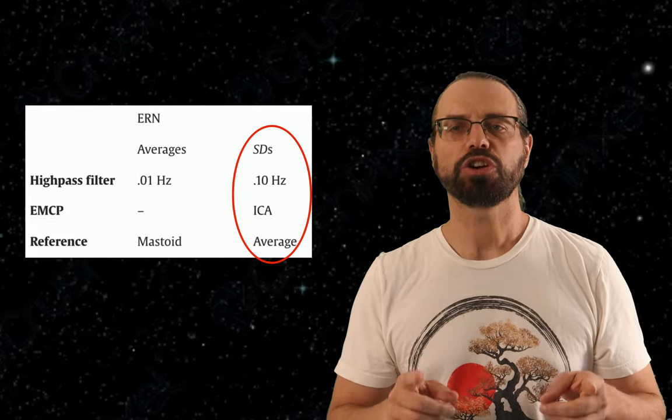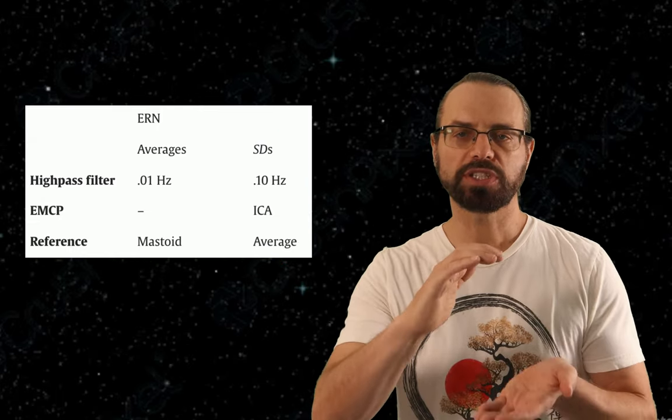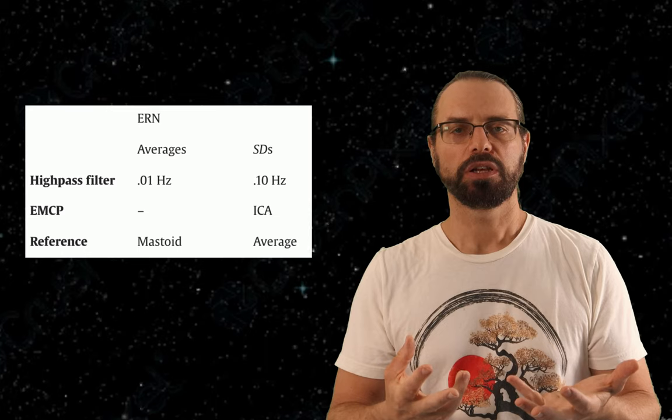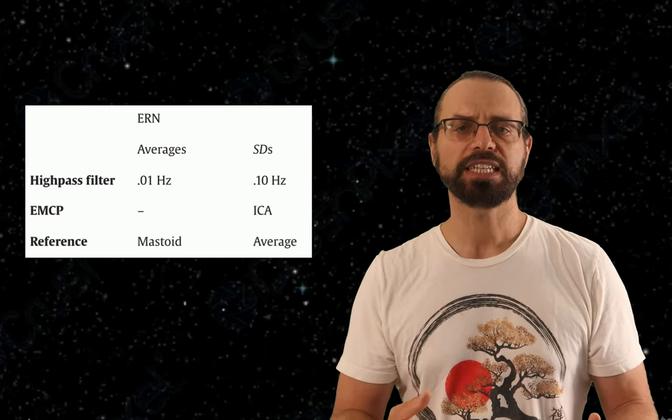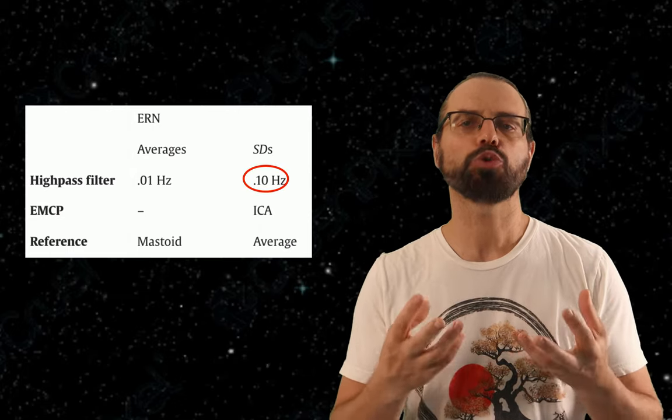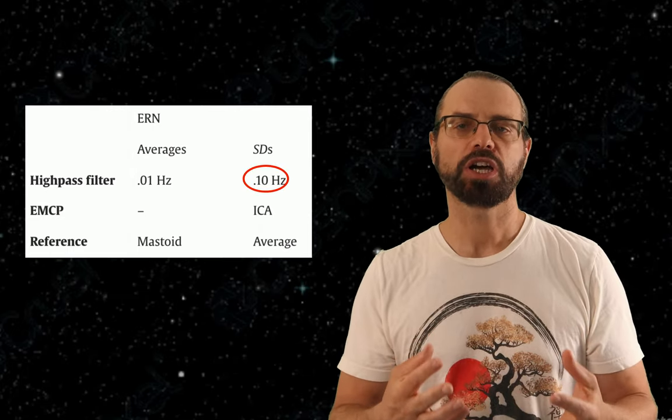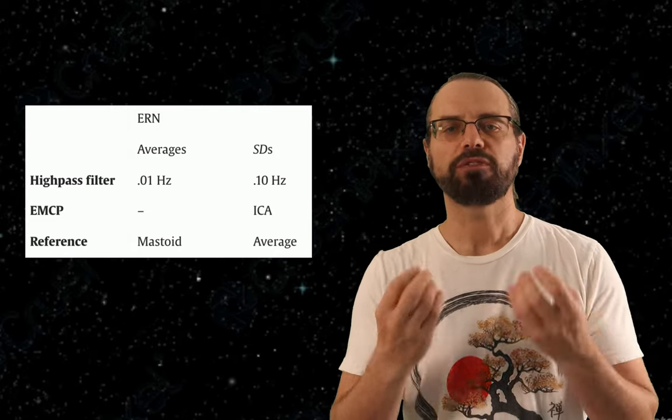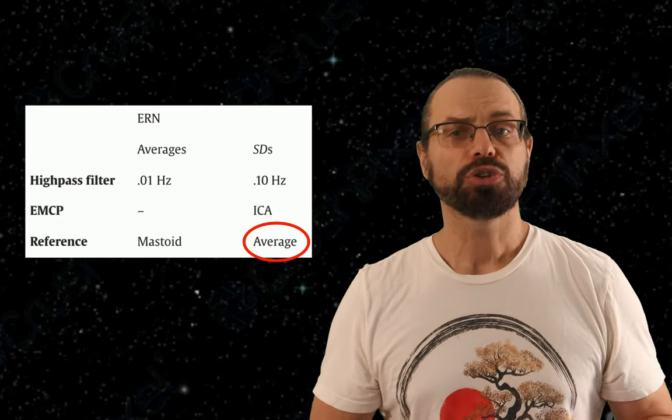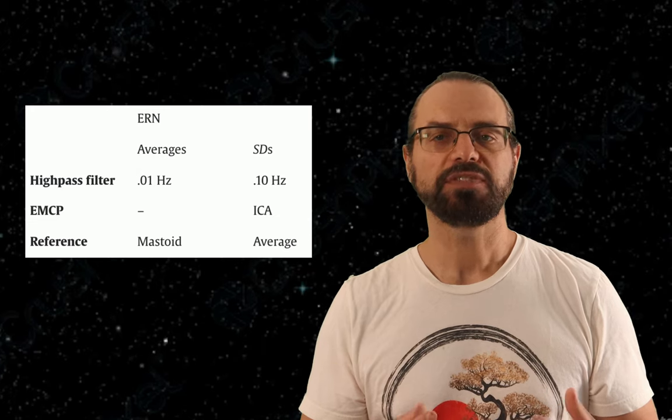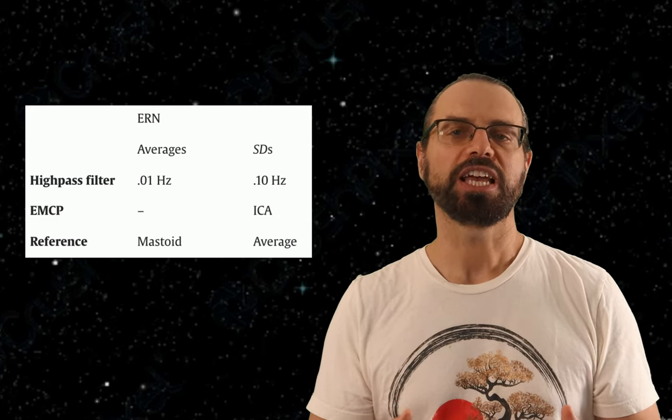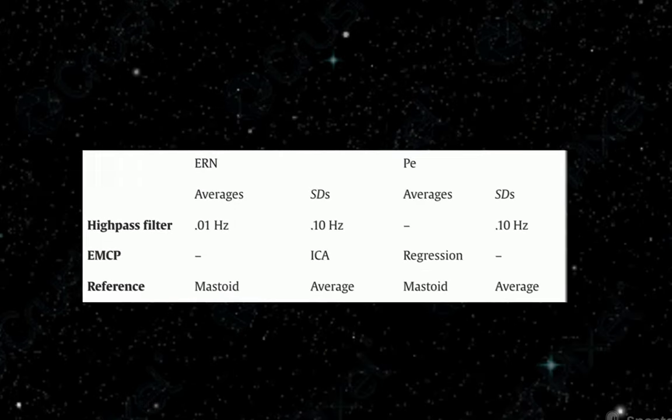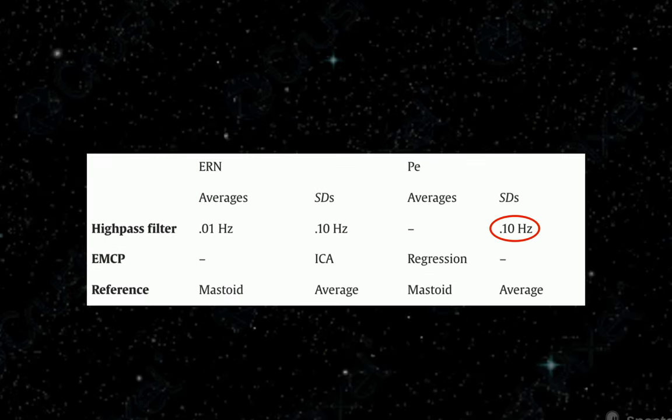Using ICA or the regression method to remove eye artifacts did not matter. They tested more than the ERN amplitude. They also tested the standard deviation across trials. The idea is that the lower the standard deviation, the fewer the outliers, and the better the preprocessing. In that case, they found that the best filter was 0.1 Hz, which was the highest possible cut-off frequency they tested. They also found that ICA was better than regression, and that the best reference was the average reference. They also tested the amplitude and standard deviation of the error positivity, or PE, which is another ERP, and found comparable results. Overall, the high-pass filter with the highest frequencies seemed preferable to reduce trial difference. So all of these results are somewhat different from our results, right? Actually, not so much.